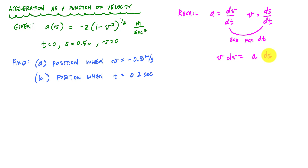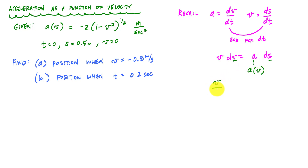Because in this case the acceleration is a function of velocity, I want to group all the velocity variables on one side and all the position variables on the other. So the relationship becomes: v over the acceleration as a function of velocity dv equals ds. Integrating this will give me position as a function of velocity.